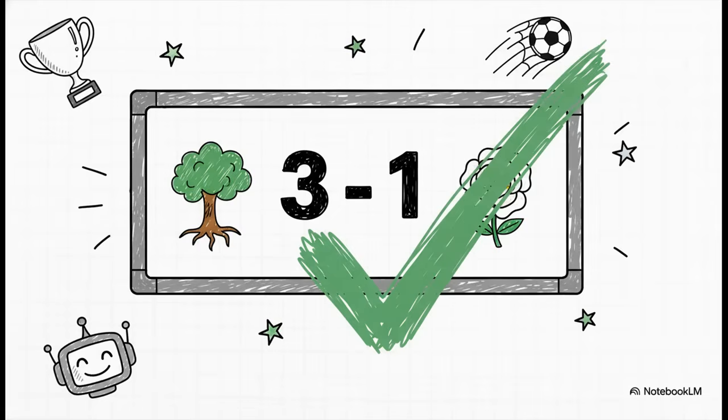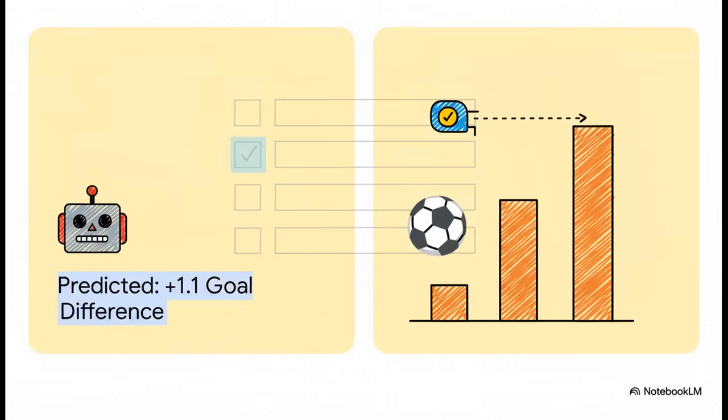So, the moment of truth. How did Spectra actually do? Well, the final whistle blew and it was a 3-1 victory for Nottingham Forest. The AI absolutely positively nailed the winner. But trust me, the accuracy here goes way deeper than just picking the right team. Check this out. The model predicted a goal difference of just over one goal for Forest. The final score was a two-goal victory. I mean, that is incredibly close. And this is where you see the real power of the AI's thinking. Because the final 3-1 scoreline was actually one of the top 5 most likely outcomes it simulated. So it didn't just guess the winner, it understood the shape of the game.